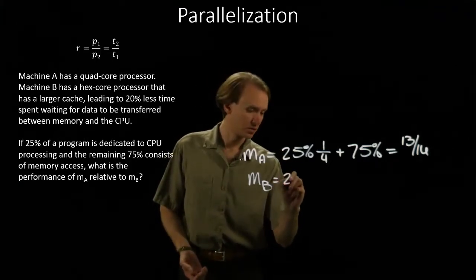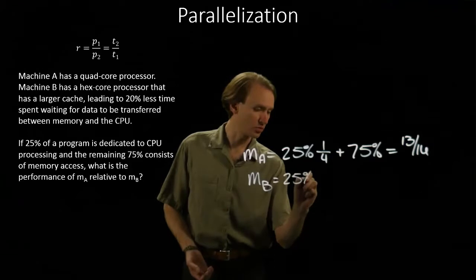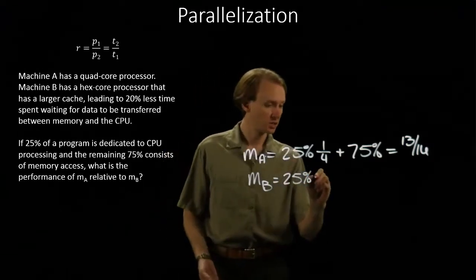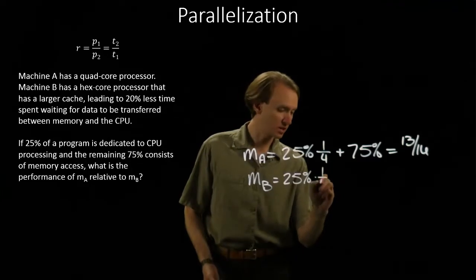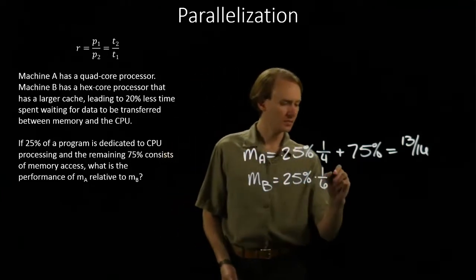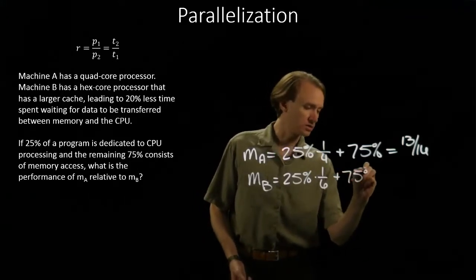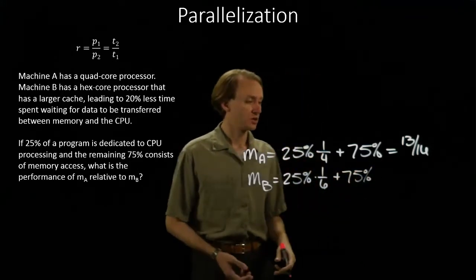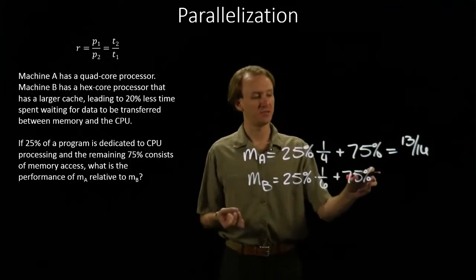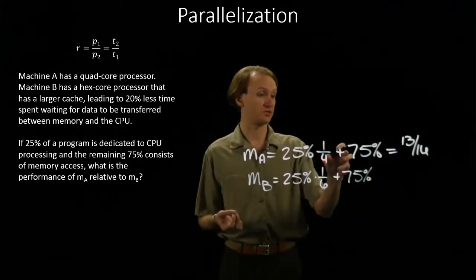Machine B gets the same programs, which has 25% of its instructions are CPU instructions, and it gets a six-time speed up for having this hex-core processor. And 75% of the instructions are memory instructions. But this time, machine B has an advantage on memory instructions relative to machine A.